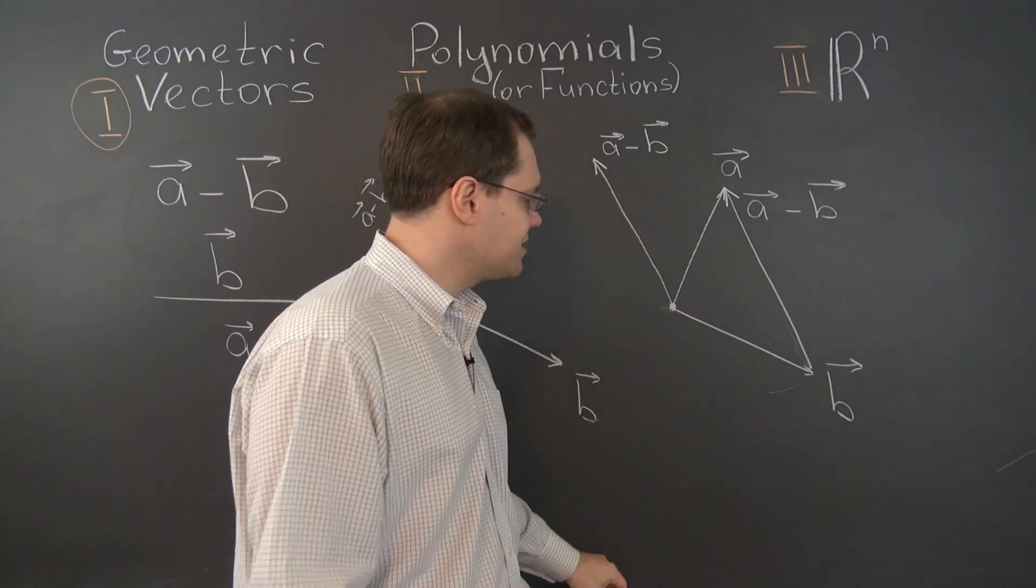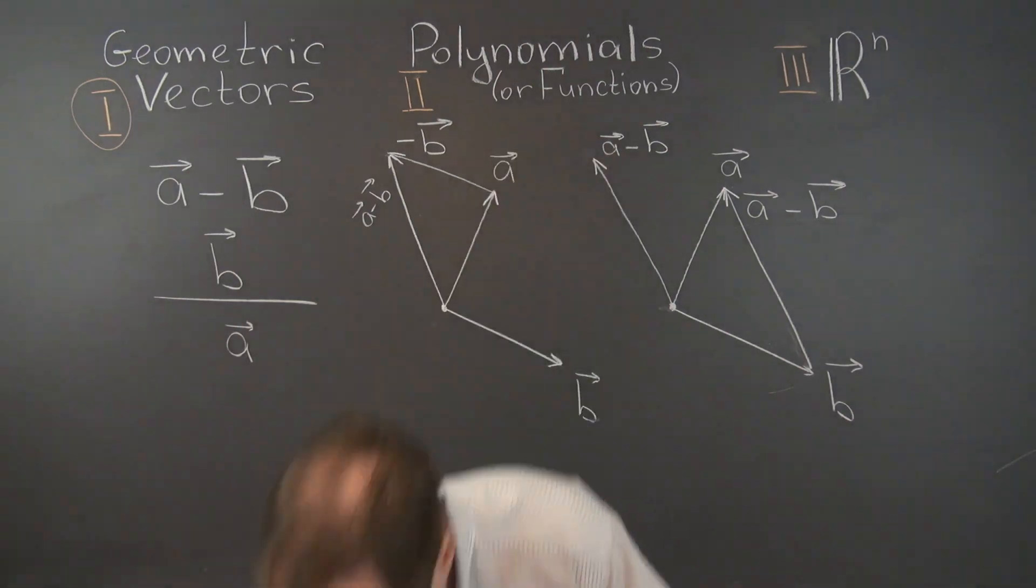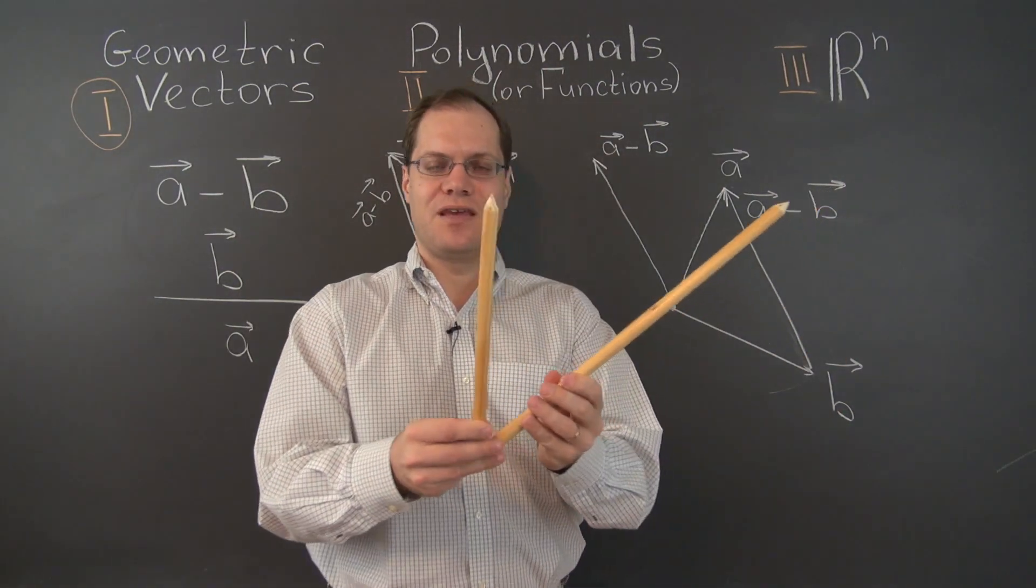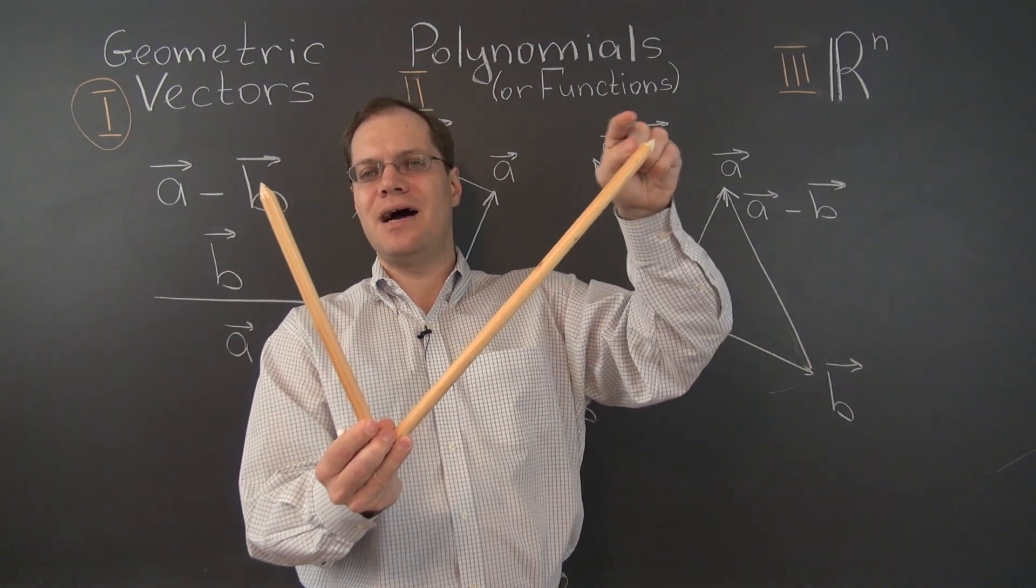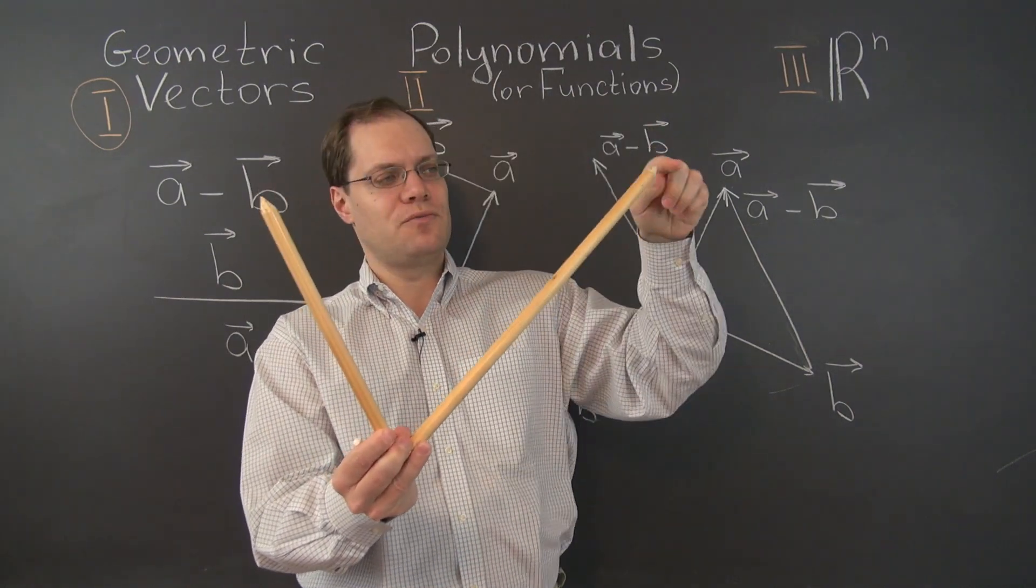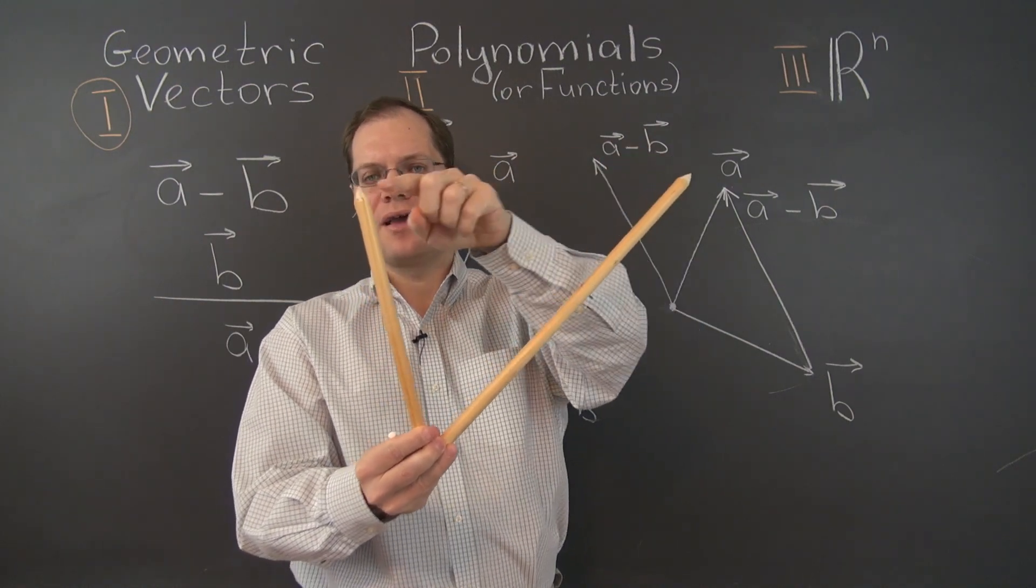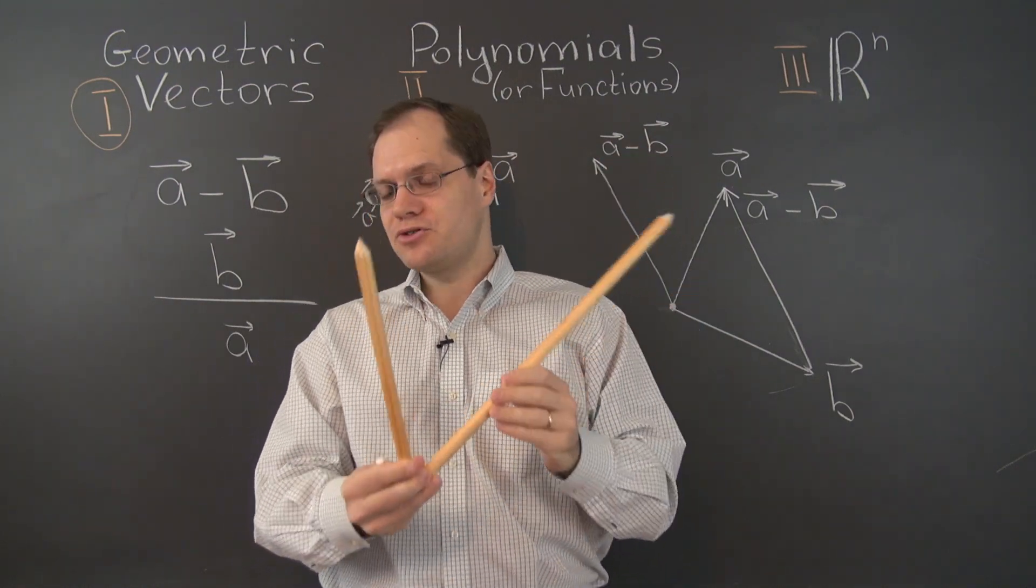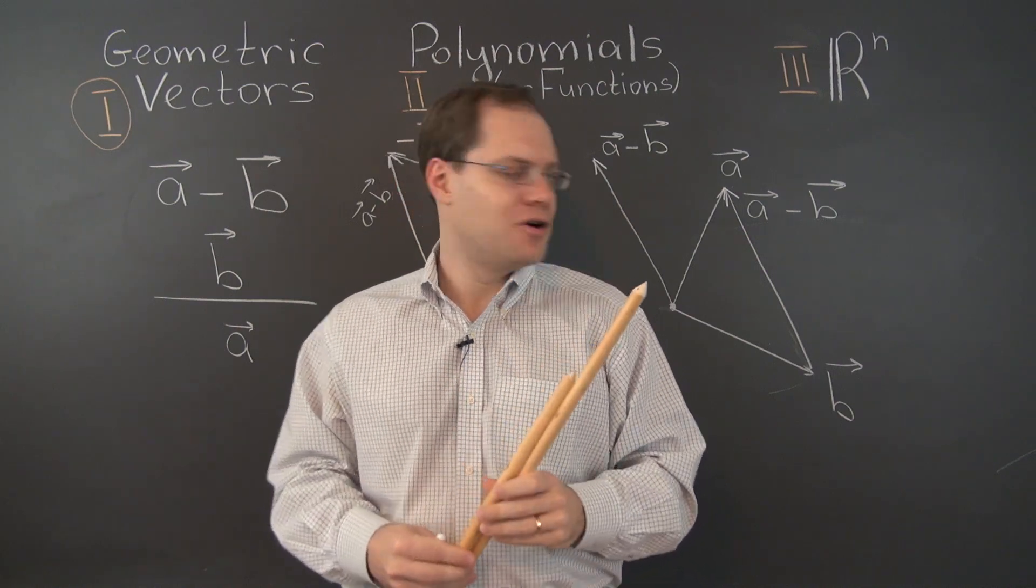Now of course, the exact same thing works in three dimensions as well, excuse me, right? If this is A and B, let's call this A and this B, A minus B will go from the tip of B to the tip of A. That will be A minus B. Both approaches actually work in three dimensions. But once again, I prefer this one.